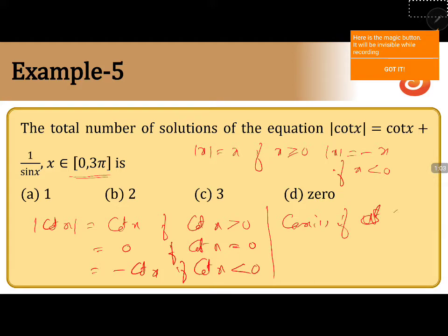If cot x is 0, case 1: the equation will become 0 is equal to 0 plus 1 by sin x, or cosecant x is 0, not possible because cosecant x does not lie between minus 1 and plus 1. You have only two conditions.